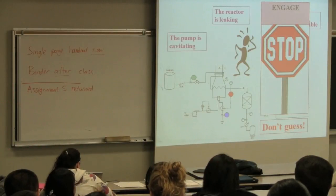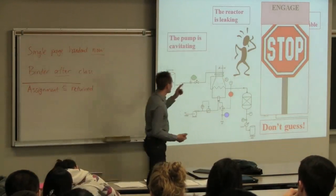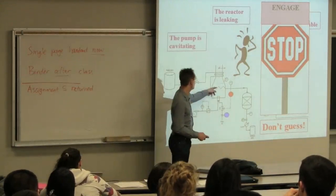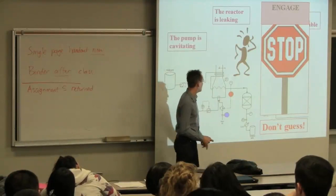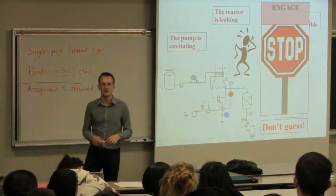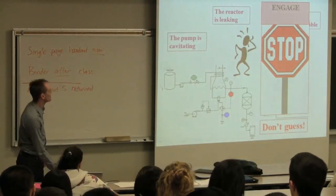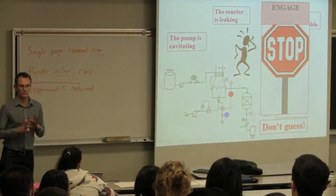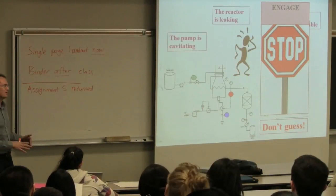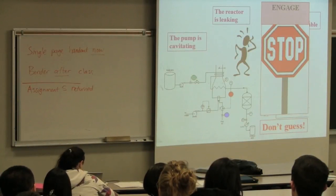Immediately people come to conclusions. They say this is the problem. The pump is cavitating or the reactor is leaking. The key issue is at this point: don't guess. It's very tempting to stand there and look at the flow sheet and just point to different parts of it and say it's that valve or there's a leak in the pipe, in the reactor. Or just to come up with ideas that may not make sense but seem to be sensible, but are just your gut reaction. The key is to simply stop, don't guess.